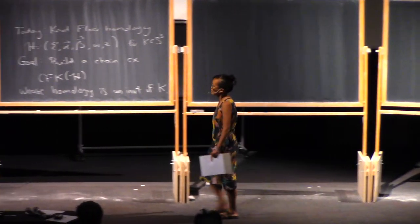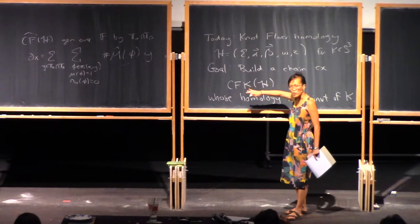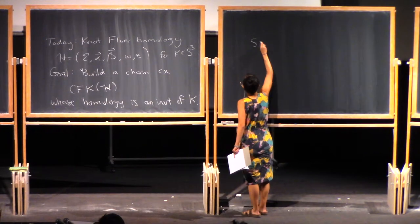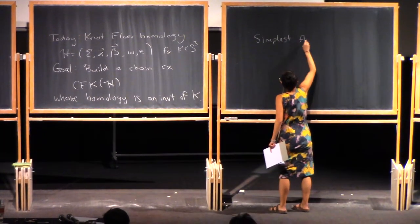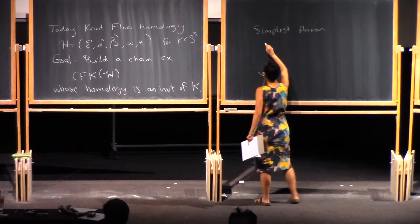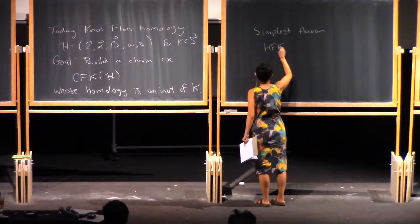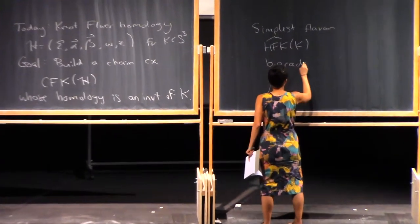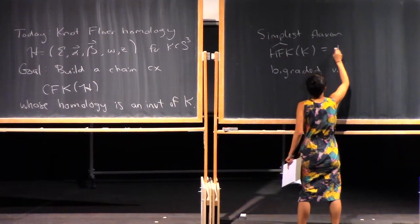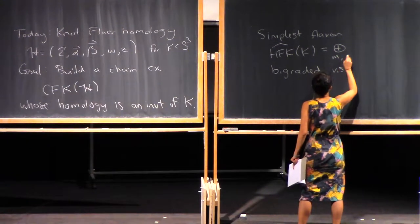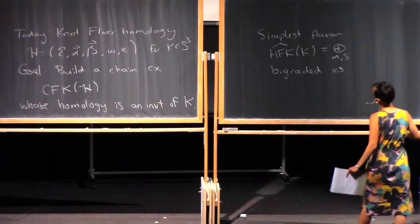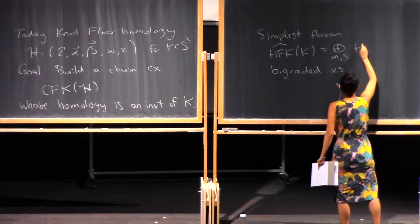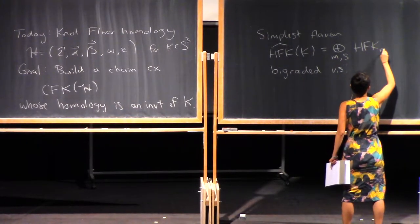Just like the three-manifold invariant, this comes in different flavors. The simplest flavor is the hat flavor, HFK hat. This is a bigraded vector space — we write it as a direct sum of its bigraded pieces. For historic reasons, the bigradings are often referred to by M and S.